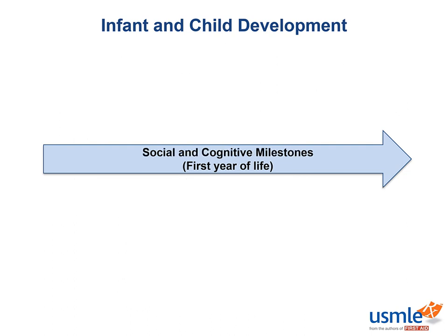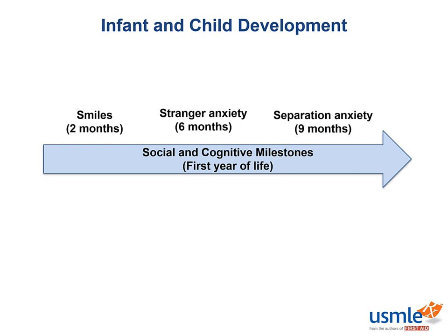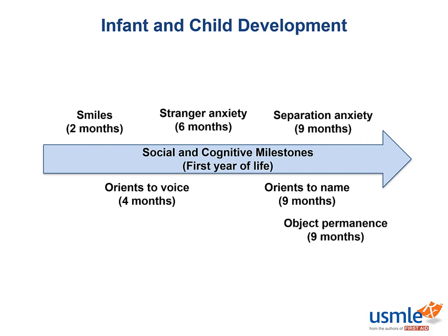Social and cognitive milestones in the infant age group include smiling at two months and developing stranger anxiety after six months, followed by separation anxiety around nine months. At four months, a baby can orient to voice. But at what age does a baby orient to its own name? This happens around nine months of age. Also around nine months, a baby develops object permanence, where babies understand that an object taken out of sight does not mean that it ceases to exist.